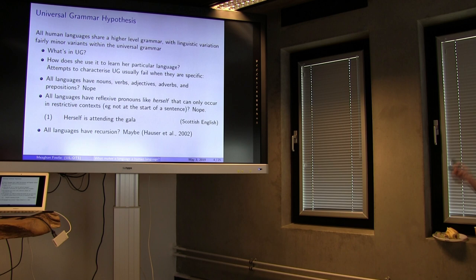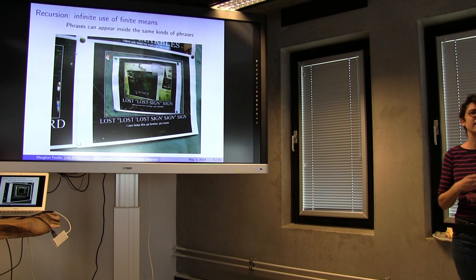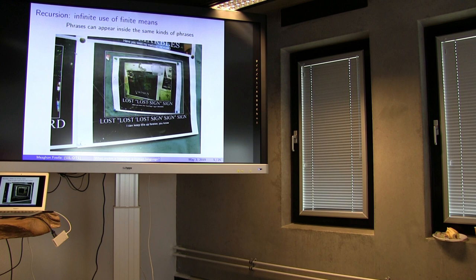The idea that all languages have recursion is better. This is something that Chomsky himself — he's one of the authors on the et al. cited here — has sometimes proposed might be all there is to UG. All there is to UG is that there's recursion in your grammar. Recursion basically means a way of making infinite use of finite means. You have some finite set of things, and you end up with an infinite set of things. In particular, we're thinking about things like the way that a phrase can appear inside the same kind of phrase that it is.